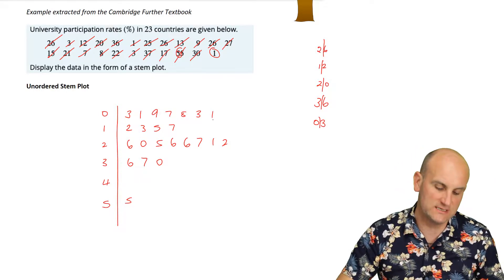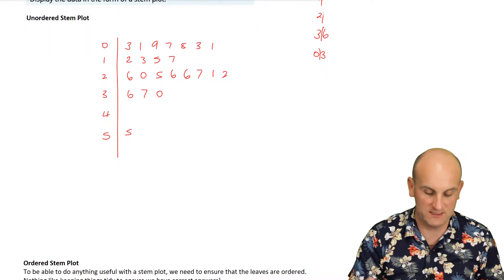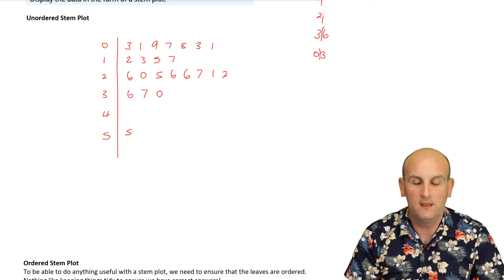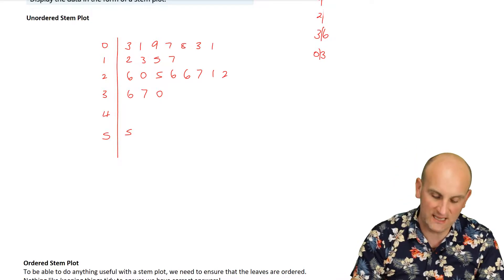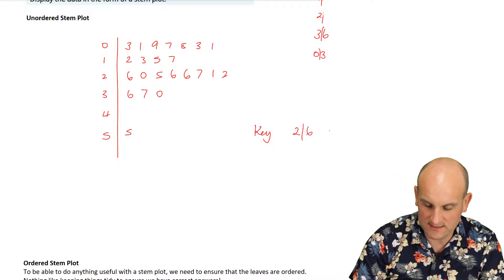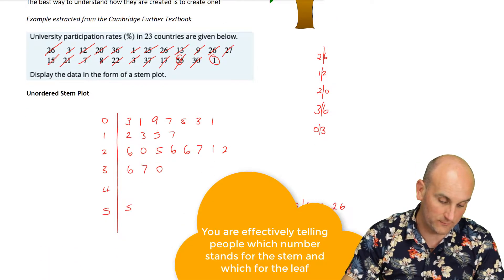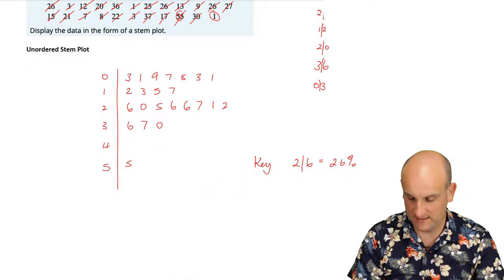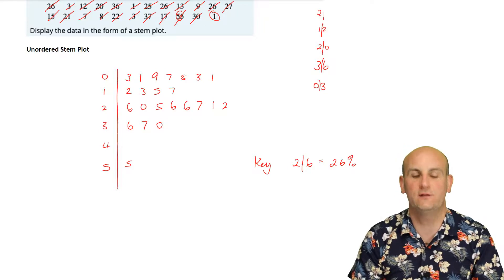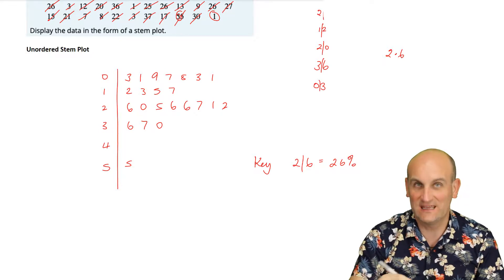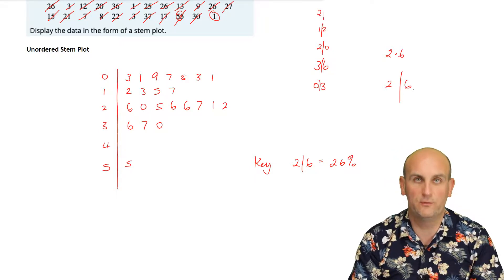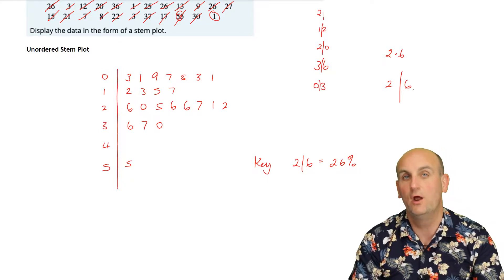And there we go — there is my unordered stem plot. The reason it's unordered is because the numbers are all over the place within each row. Now, one very important piece of information is missing: a stem plot must always have a key. The key indicates what the numbers are standing for — for example, '2 | 6 = 26%'. This is especially important because decimal numbers can also be used in stem plots, where 2 | 6 could mean either 26 or 2.6.